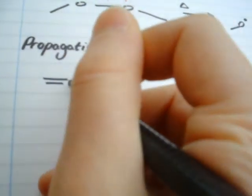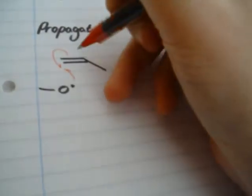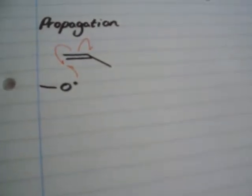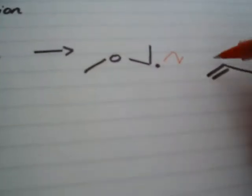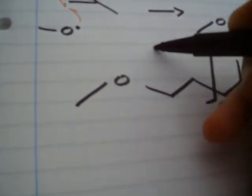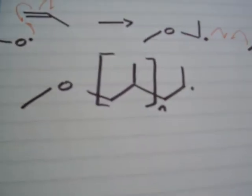The second step is propagation. We have our molecule of propene, and our radical attacks this. We have an electron here, one electron from the bond here, and one going to here. That removes the double bond and gives this molecule with a radical. If we then have another molecule of propene, you can see the same thing happening with this radical, and you can see how the chain would keep growing on and on, until you end up with a long polymer chain.